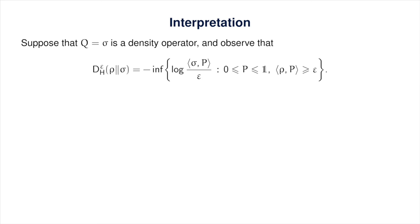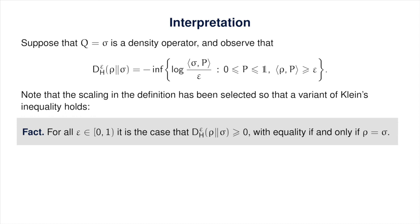You might wonder why the scaling is selected the way it is — the reason is that this scaling gives us an analog of Klein's inequality, at least when epsilon is less than one. There isn't universal agreement on the definition of the hypothesis testing relative entropy. Some authors choose a different definition, and what is particularly confusing is that sometimes the definition will effectively reverse the meaning of epsilon, so that a larger epsilon gives a stronger notion of divergence. Everyone is free to pick their own definitions as long as they're clear about what those definitions are.